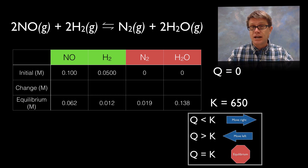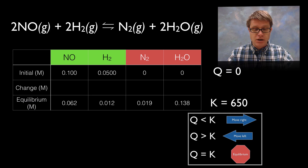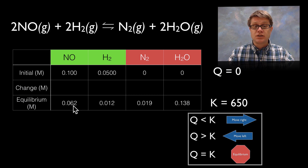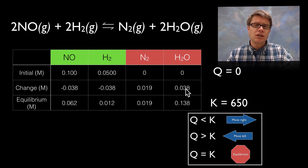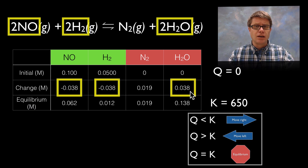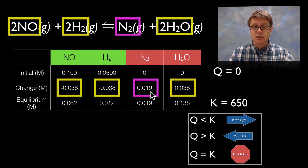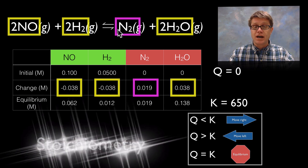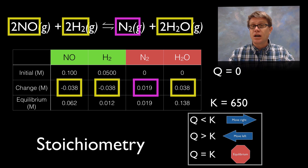We can figure out our change values in the ICE table. If the equilibrium value is 1 and the initial was 0.062, we subtract 0.038. Looking at all the change values, there's an interesting pattern — we're either subtracting or adding the same amount across species. This reflects stoichiometry: for nitrogen gas the change is only half as much because there is only one mole of it compared to two moles of the other species. Stoichiometry guides the change row in an ICE table.